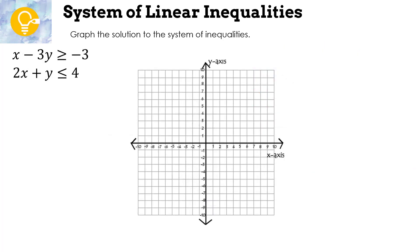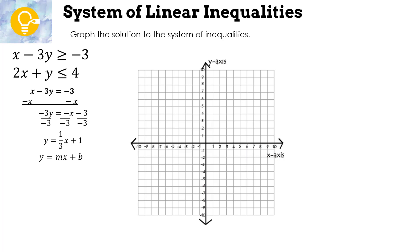Here's one for you to try. Graph the solution to the system. For x − 3y ≥ −3: put in an equal sign and solve for y. Subtract x from both sides and divide by −3: slope = 1/3, y-intercept = 1. Graph dot at 1, go up 1 over 3. It's a solid line because of 'greater than or equal to.'